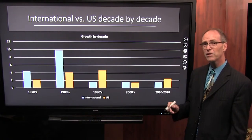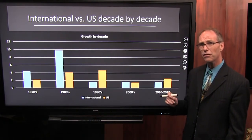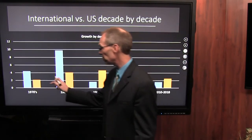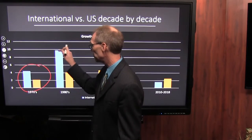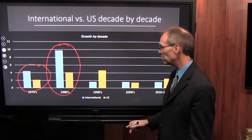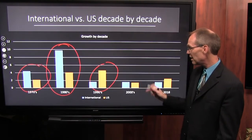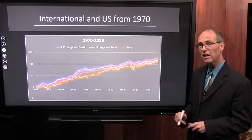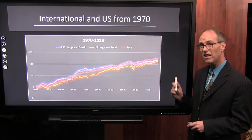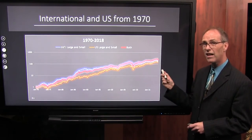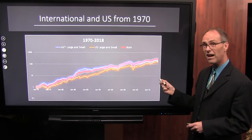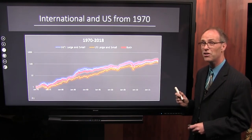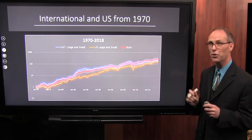Now let's take a look back decade by decade at international versus U.S. stocks. You can see that international stocks can have periods of time where they do tremendously well versus U.S. stocks, and there are also periods where U.S. stocks do better. That's why we want to be in these various areas. Here you can see the blue line is international stocks, the orange line is U.S. stocks, and the red line is what happens if you own them both. We definitely see diversification benefits and a reduction in risk when we own them both.